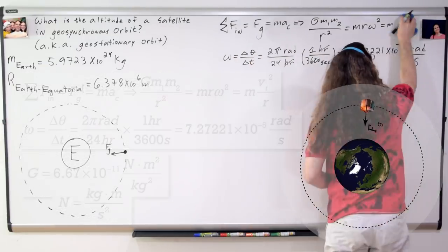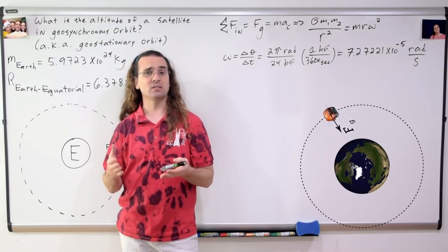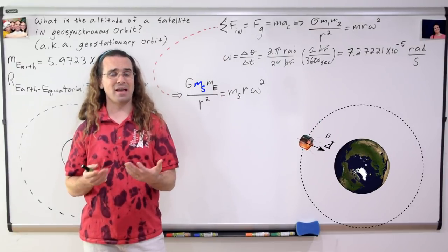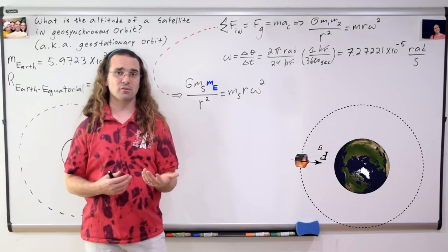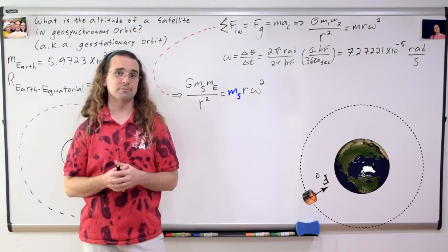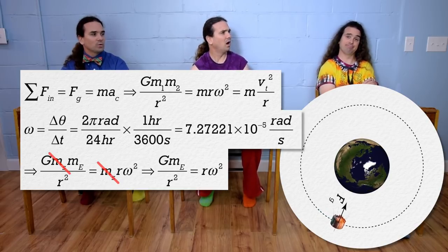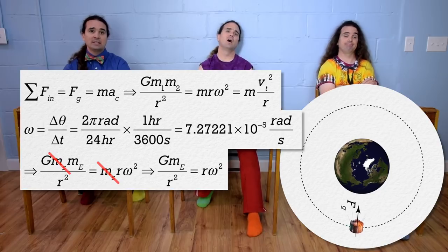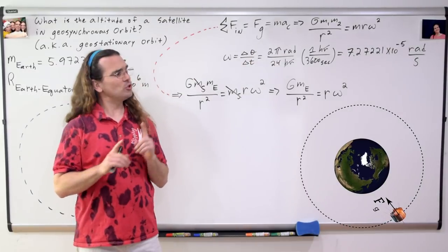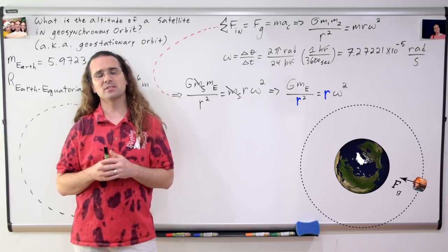Now that we know we are using angular velocity and not tangential velocity, let's identify our masses. In Newton's universal law of gravitation, one of the two masses is the mass of the satellite and the other is the mass of the Earth. The satellite is the object in orbit, the object which has the angular velocity. We need to specify it is the mass of the satellite. Bobby, what about the two r's in this equation? Could you please tell me what they are specifically in this example?